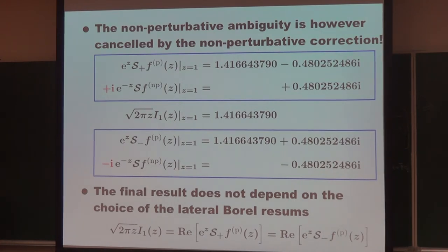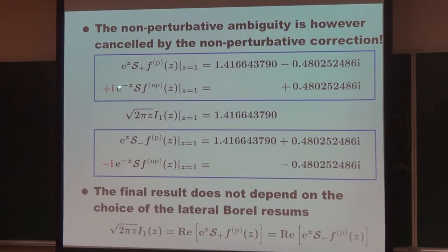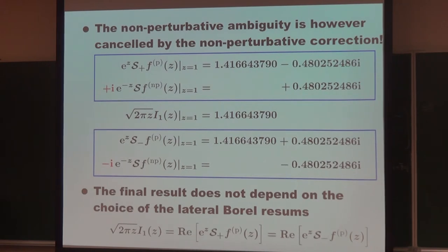One can confirm that this structure holds for any value of g, and the final result does not depend on the choice of the lateral contour. The exact Bessel function result is recovered from the real part of the lateral Borel summation plus the non-perturbative term. This real part appears as a consequence of the cancellation, and we do not need to drop the imaginary part by hand — it is automatically cancelled.